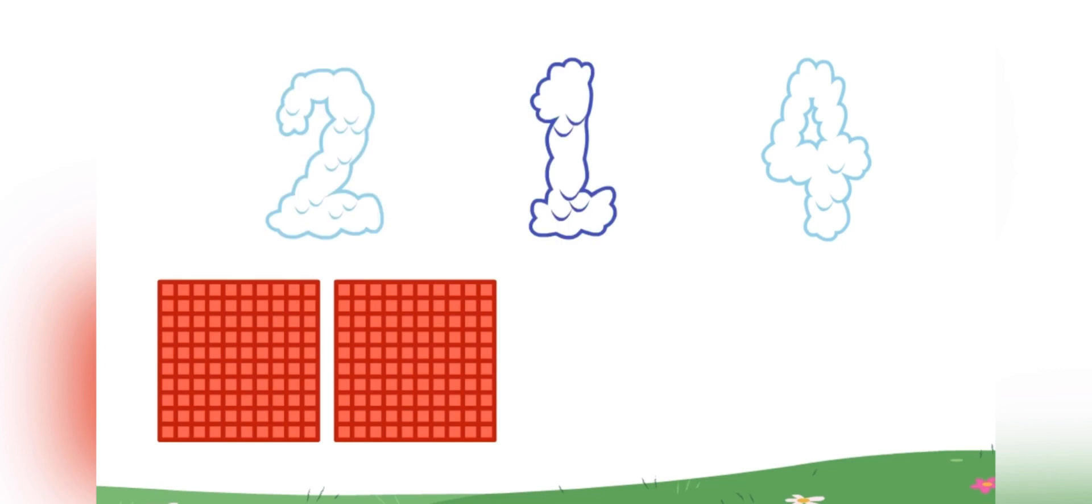This number is in the tens place. It tells us that there is one group of ten. And this number is in the ones place. It tells us that there are four ones. Wow-wee! Oh, they're beautiful.